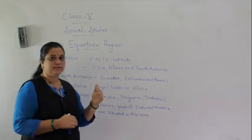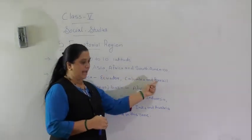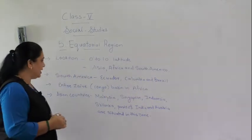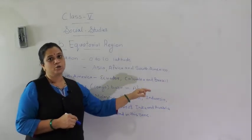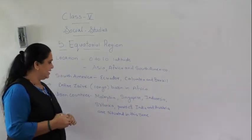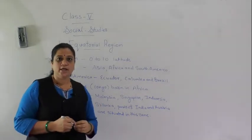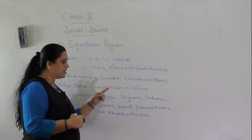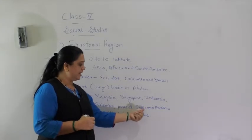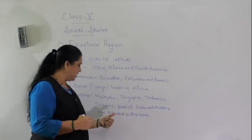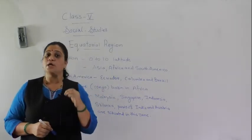In South America, the countries that fall in this region are Ecuador, Colombia, and Brazil. The entire Zaire-Congo basin in Africa also falls in this region. The Asian countries in the equatorial region are Malaysia, Singapore, Indonesia, Sri Lanka, and parts of India and Australia. So this is about the location of the equatorial forest region.